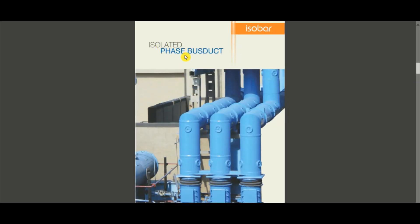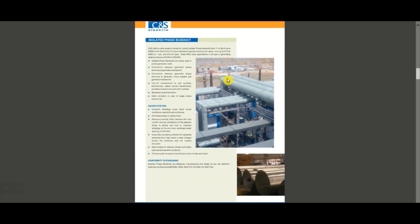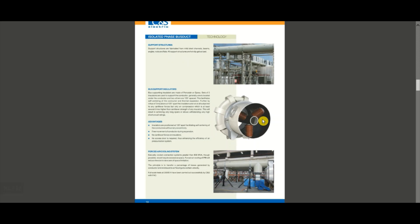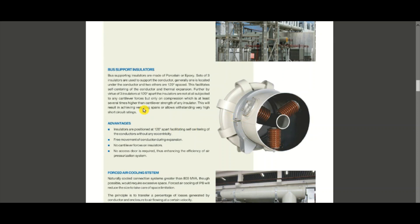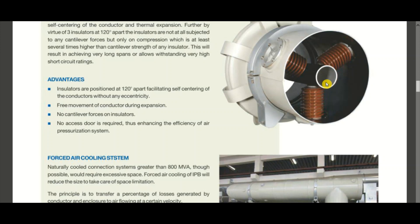This is the isolated phase bus duct. The bus support insulators are positioned 120 degrees apart from each other. The round conductor in the center is the current-carrying bus conductor. The three insulators support it, and the overall outer enclosure surrounds everything. These insulators are kept at 120-degree intervals inside the enclosure.